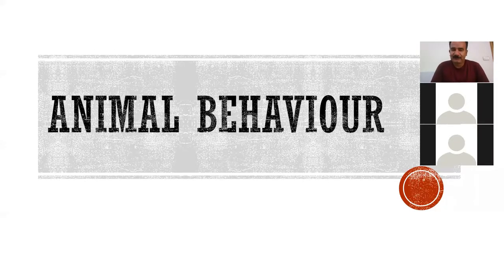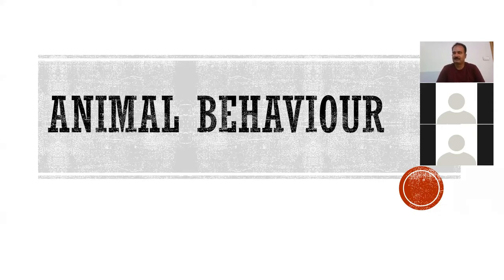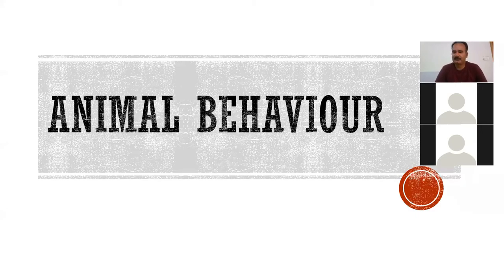Assalamu alaikum everybody. Today we will talk about animal behavior, one of the most interesting topics in the subject of animals and environmental sciences. Behavior is the combination of stimulus and response. Stimulus can come from the internal environment, like pain in our stomach, or from the external environment, like feeling cold or warmth of the weather. Animals change their place according to their ease, for shelter, food, and reproduction.